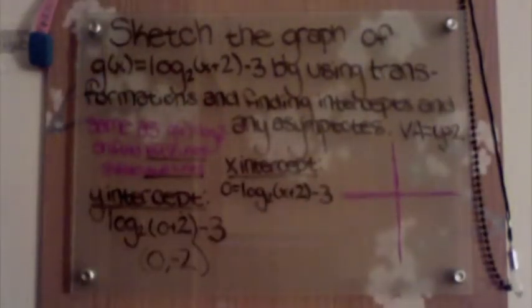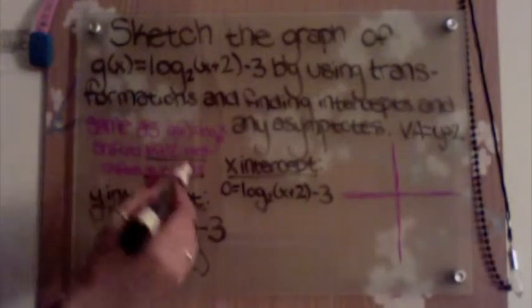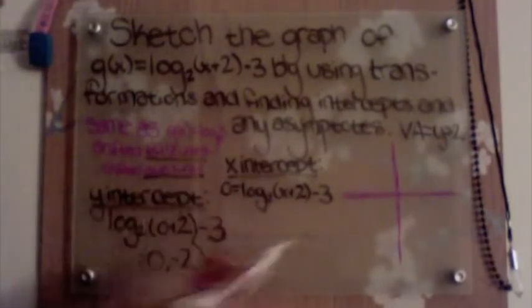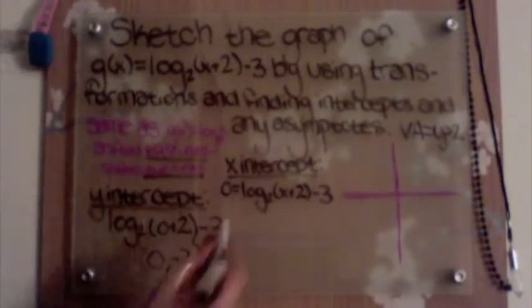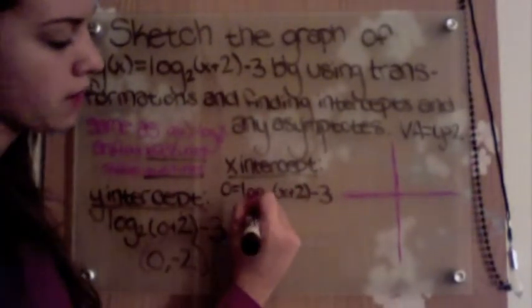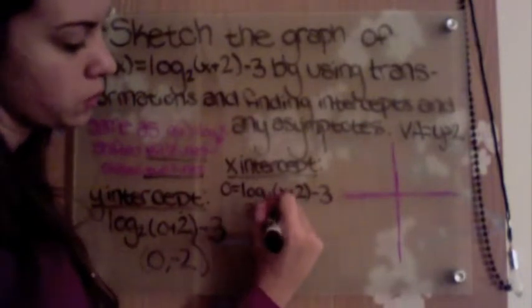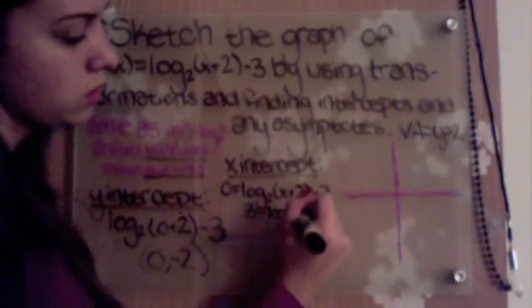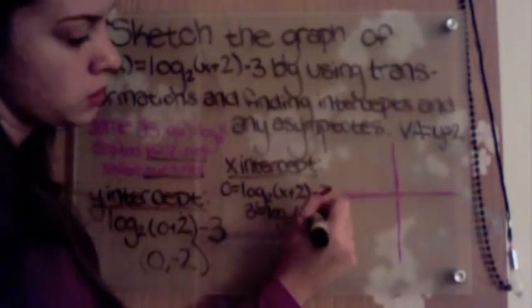Now we'll do our x-intercept. To do our x-intercept, we make y equal to 0. So 0 = log base 2 of (x+2) minus 3. We're going to move our 3 over, so we have 3 = log base 2 of (x+2) in parentheses.